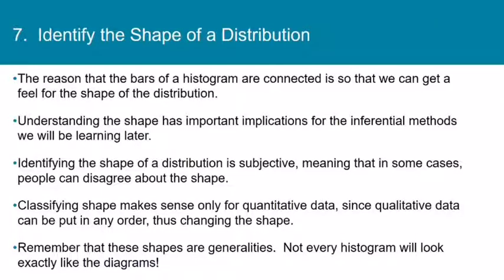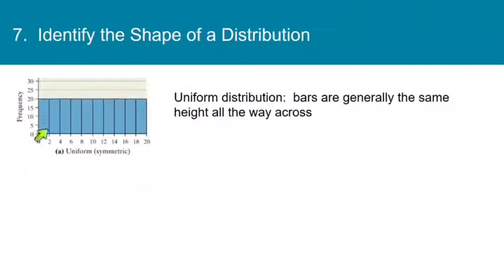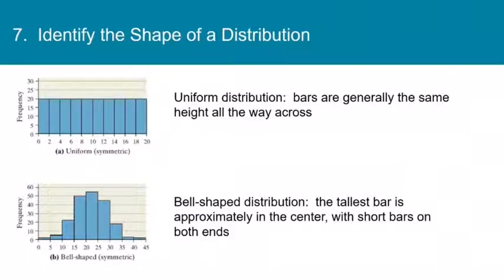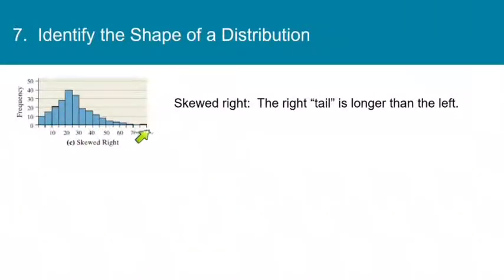Not every histogram will look exactly like one of these diagrams. First we have a uniform distribution — uniform because all bars of the histogram are about the same height; they won't be perfectly equal, but generally the same with no drop-off toward either edge. Next is a bell-shaped distribution — if you draw over the tops of the bars you get a bell shape, with the tallest bar approximately in the center and shorter bars on each end. Then there is a right-skewed distribution, with a tail that trails off to the right, where large extreme values pull the mean upward.